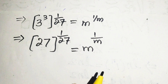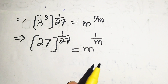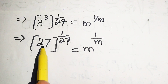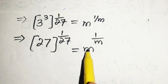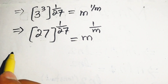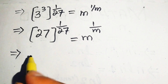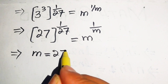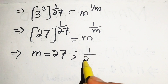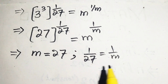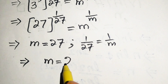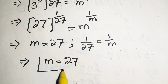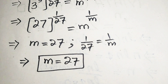Now we have the desired condition: on the left side the base is 27 and the exponent is 1/27, which is the reciprocal of the base — the same condition as the right hand side. Comparing both sides, we get m = 27, and also 1/27 = 1/m, giving the same value. Therefore m = 27 is the only solution.